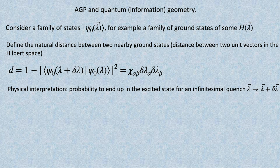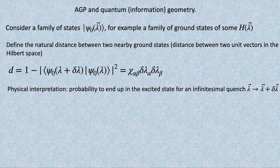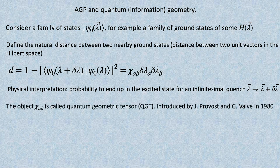Physically, this distance is the probability to end up in an excited state if you do a small quench. This is one of the standard problems in quantum mechanics: you have a square well potential, you slightly change the volume. The initial wave function is the ground state of the old Hamiltonian. You compute the overlap with the ground state of the new Hamiltonian, square it, and one minus this is the probability to be in some excited state.